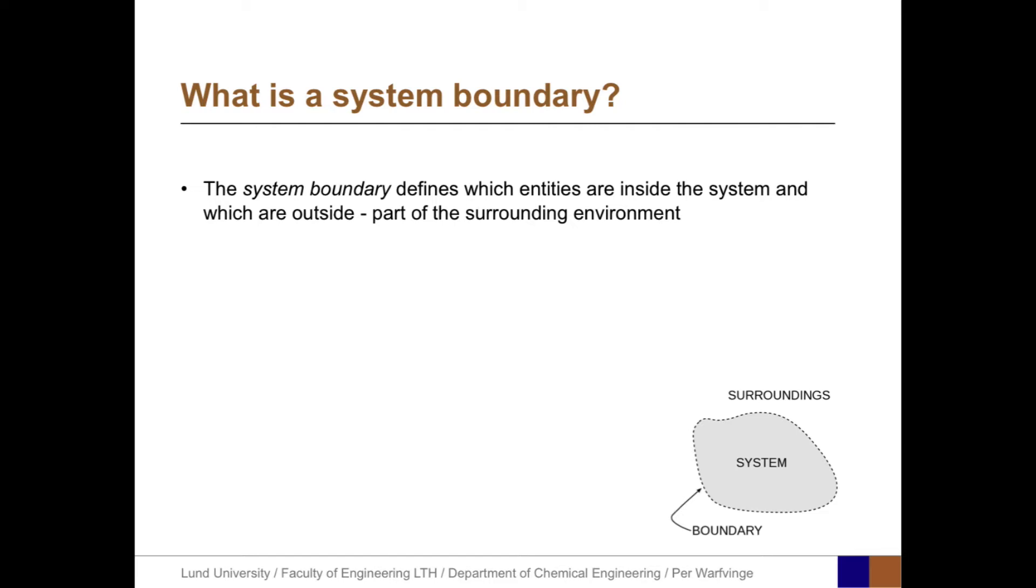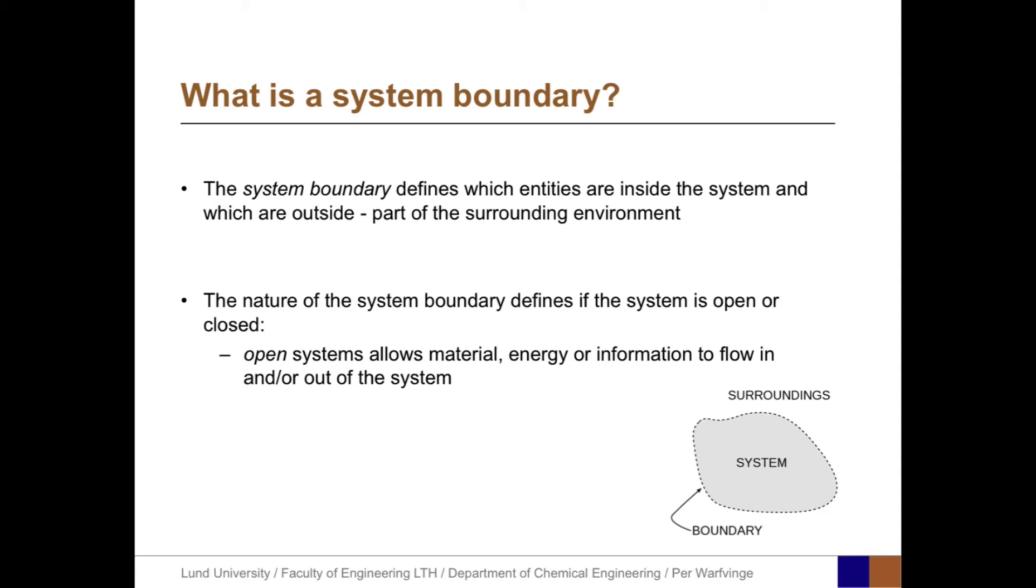The system boundary defines which entities are inside the system and which are outside. In fact, there is no unambiguous definition of a system. Systems are all defined by their system boundaries. One important property is whether a system is open or closed. An open system allows material, energy, or information to flow in and out. A closed system's boundary does not allow flows in or out.